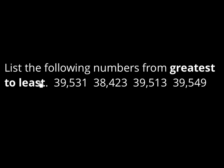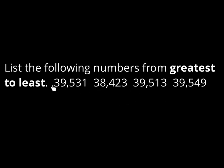Now let's do the opposite — sometimes they'll tell you to order from greatest to least. Let's also add a fourth number and another place, so now we have numbers in the ten-thousands place. We have 39,531; 38,423; 39,513; and 39,549. At some point you'll be able to look at these and know to start with the biggest place first. You'll notice all the threes are the same, so you'd move to the thousands place. But let me show you once more how to do it when you line up the places, in case you're not quite ready for that yet.